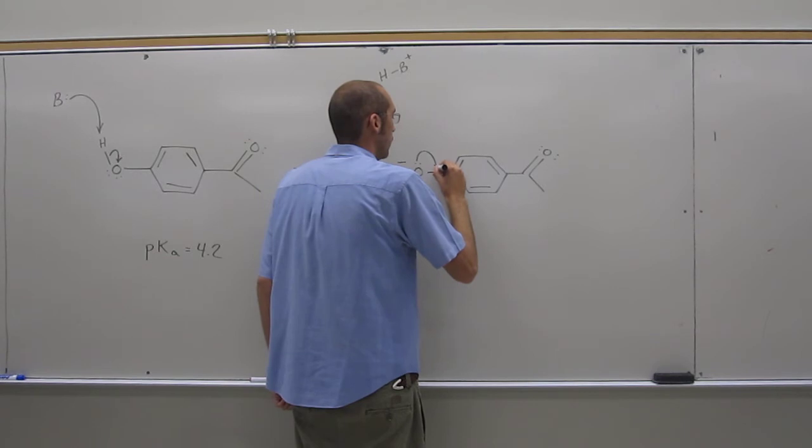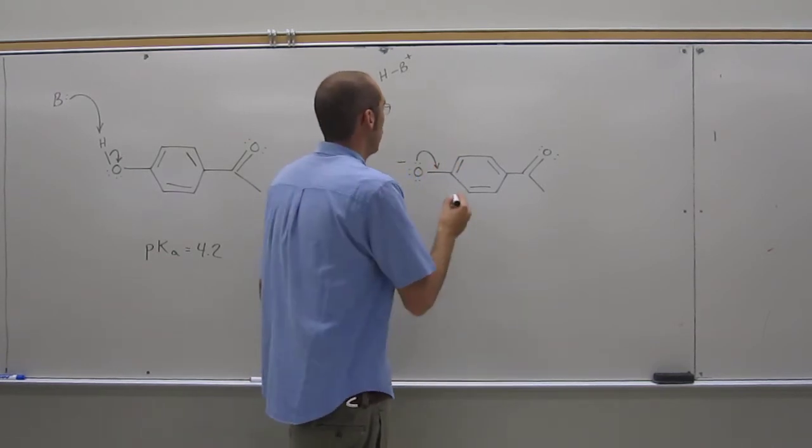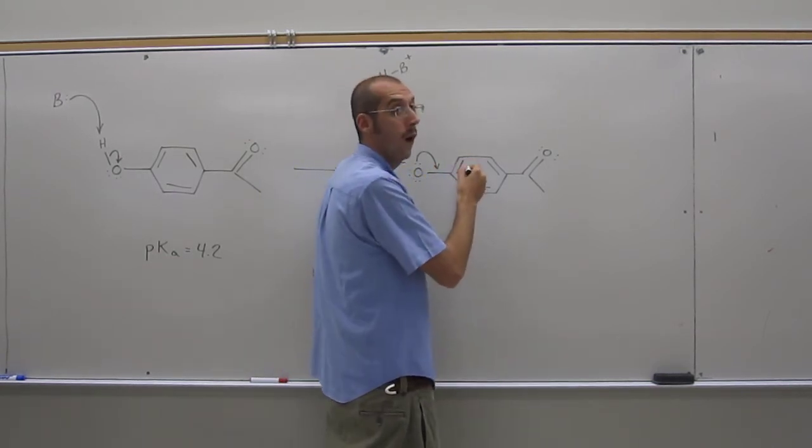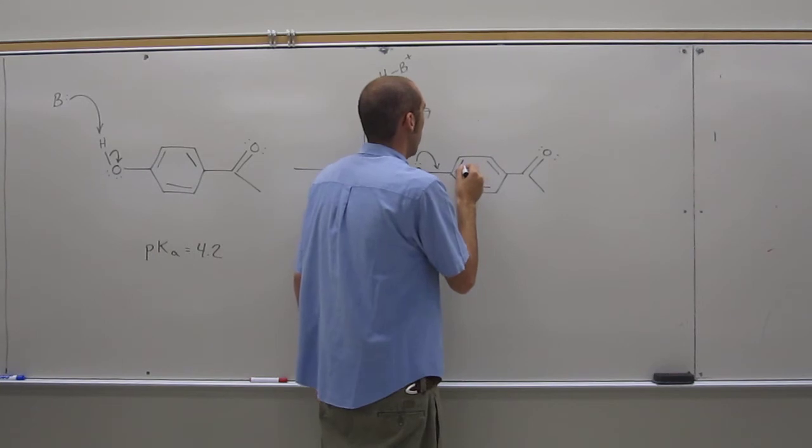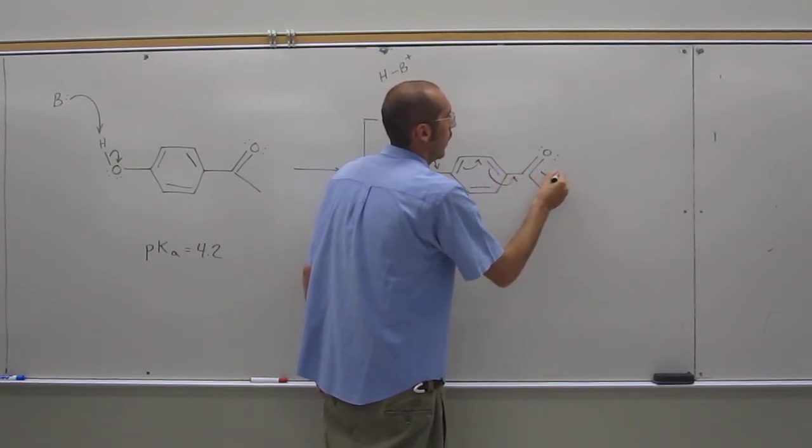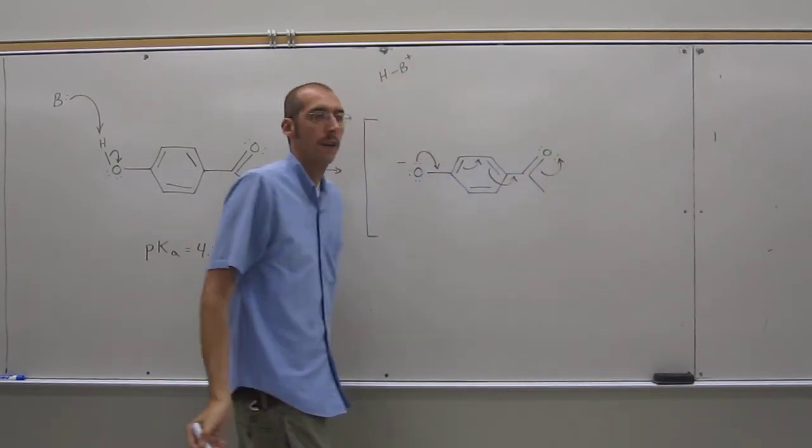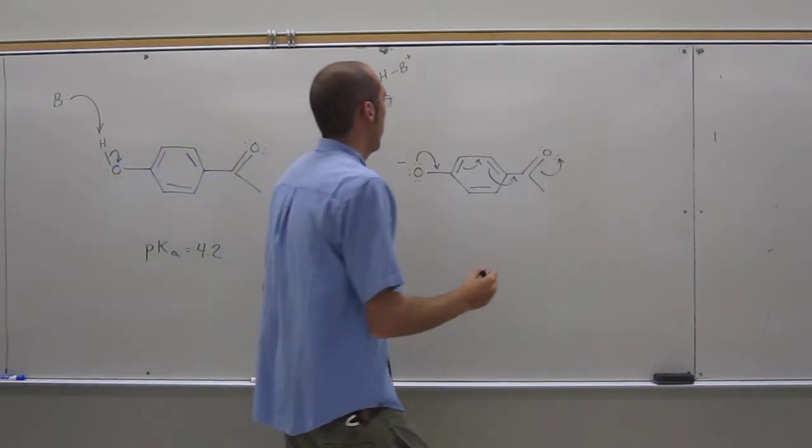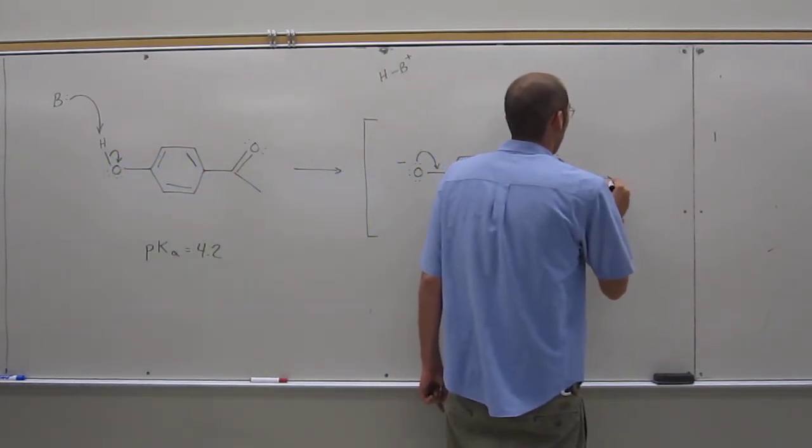So we can take those electrons, bounce them there. Of course, I'll do one of these resonance forms. Well, we'll do that later, but the other major resonance form is going to have those arrows. Remember, resonance arrow.